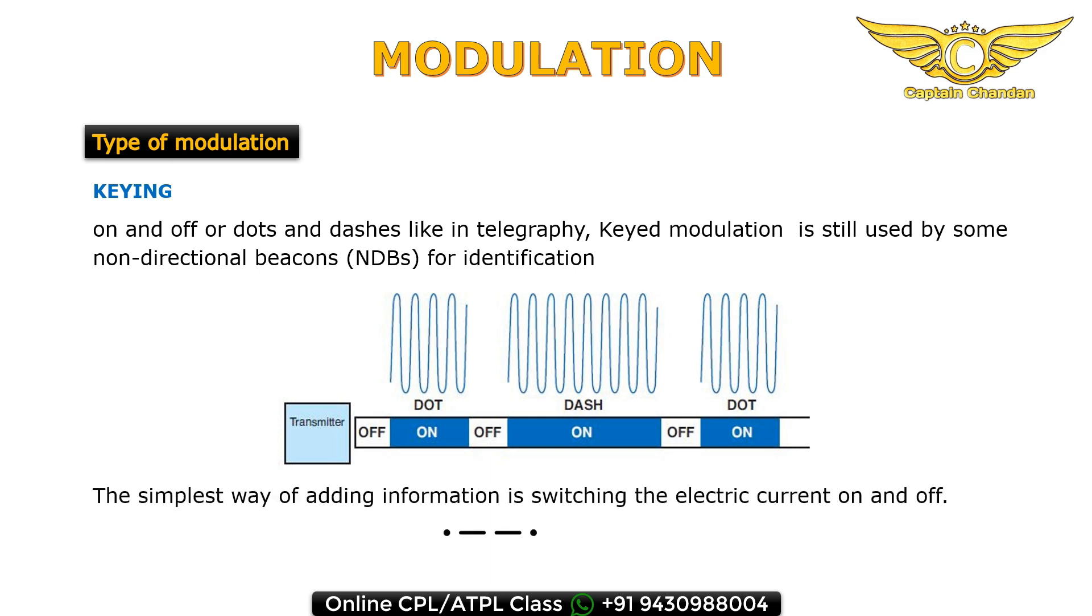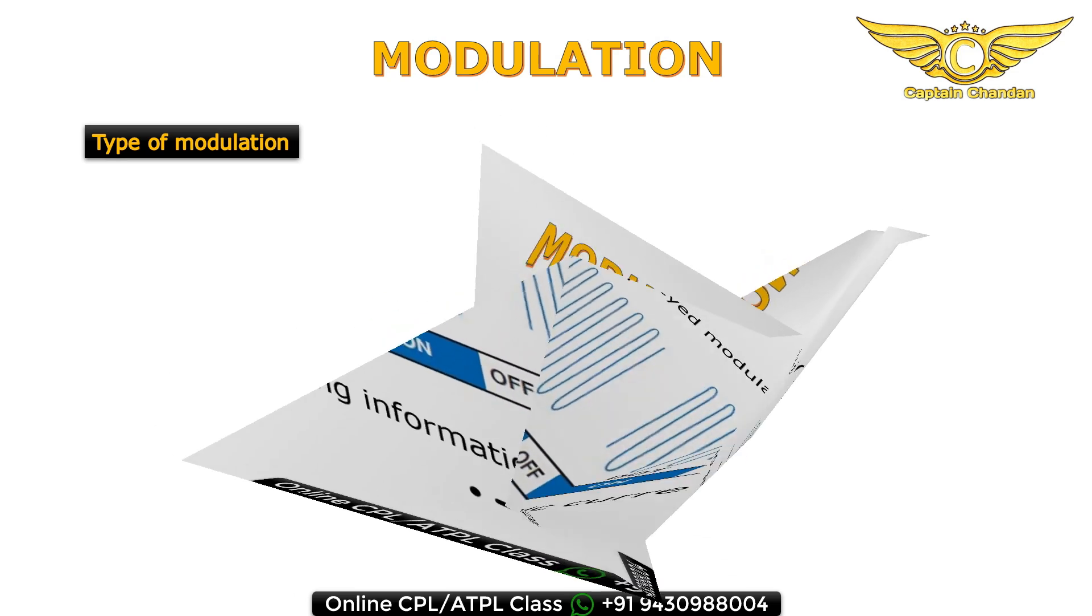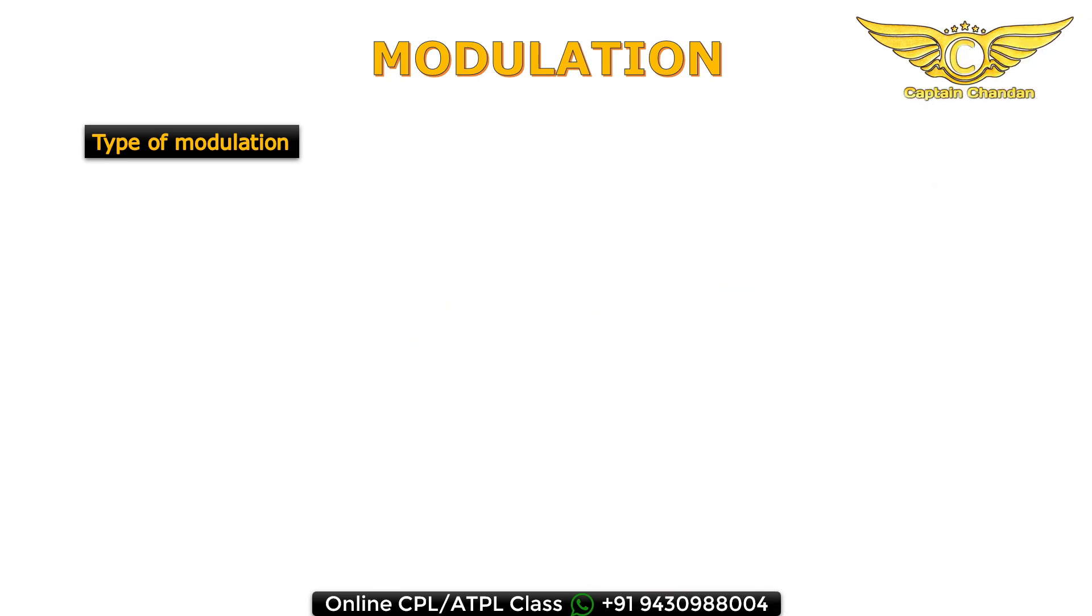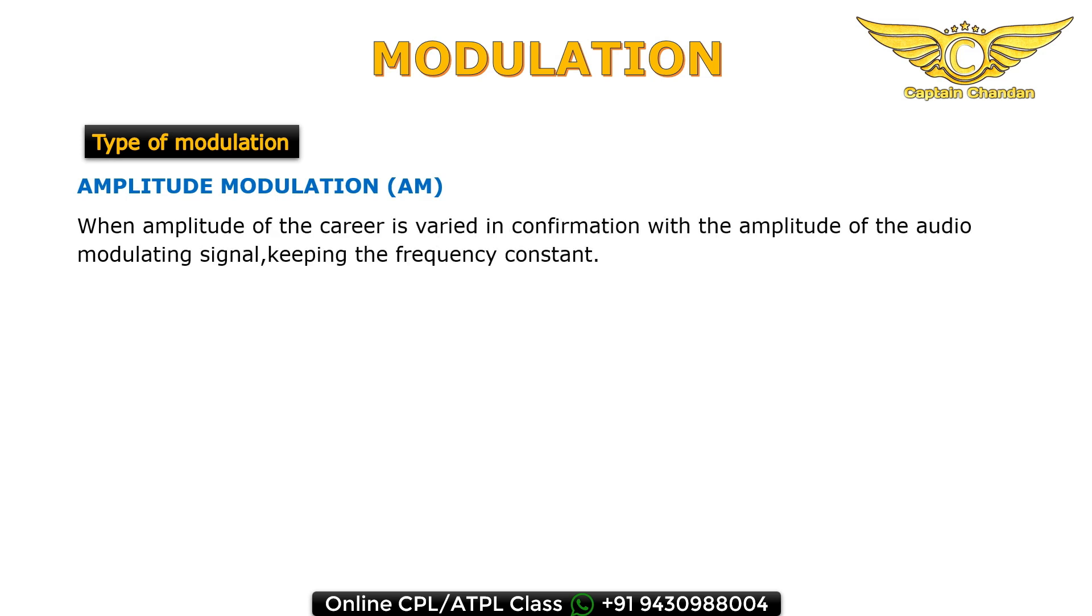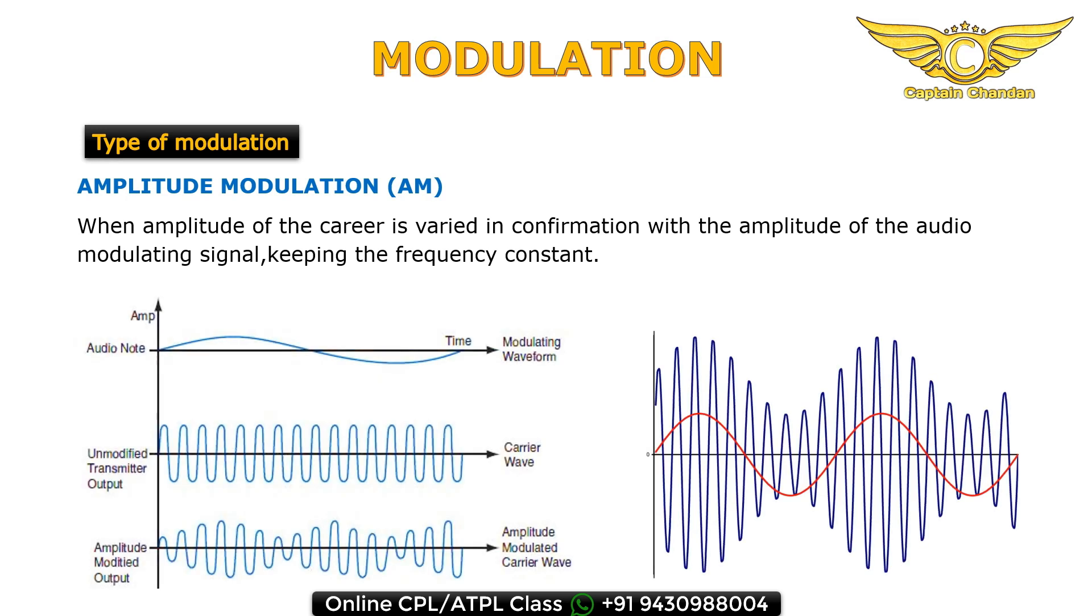Amplitude modulation: when the amplitude of a carrier is varied in conformance with the amplitude of the audio modulating signal, keeping the frequency constant. Here the red wave is the audio signal and blue is the carrier wave. After modulation, the carrier wave changes its amplitude according to the audio signal amplitude, but frequency remains constant.